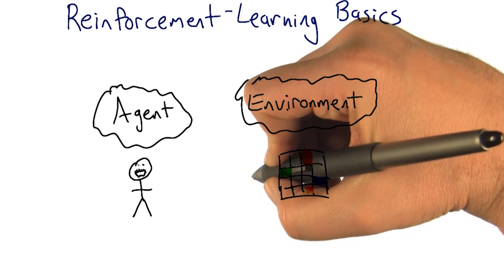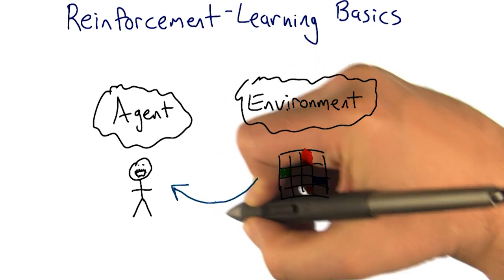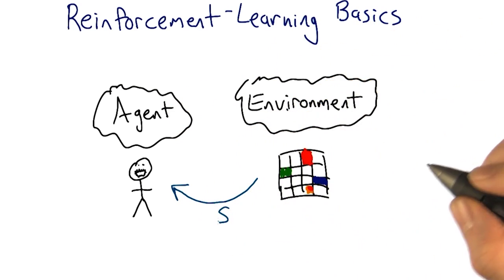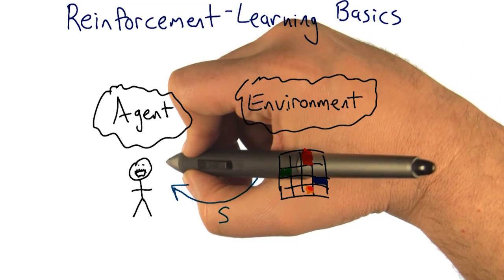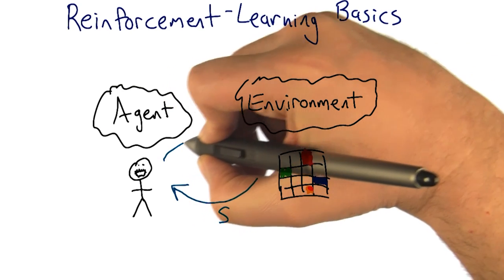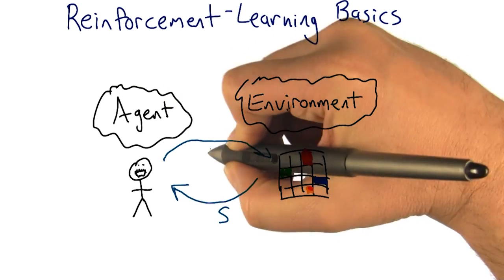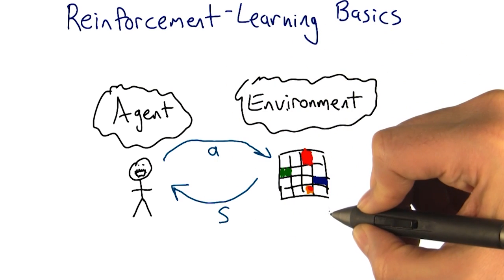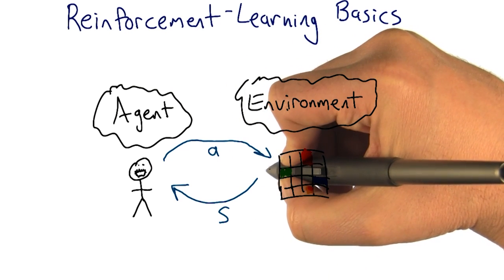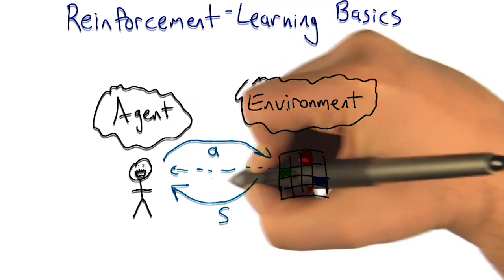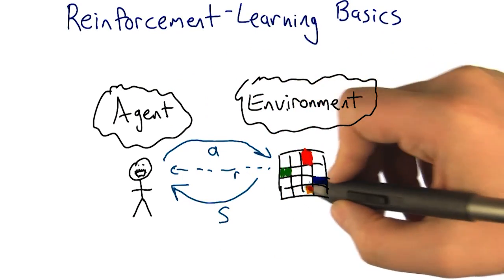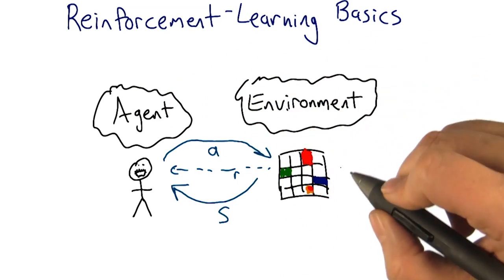The environment is going to reveal itself to you, to the agent, in the form of states S. You then get to have some influence on the environment by taking actions A. And then you also receive back, before the next state, some kind of reward for the most recent state action combination.